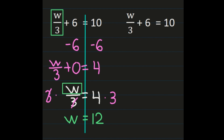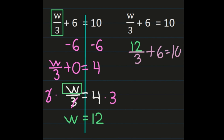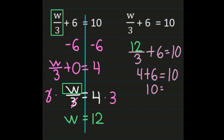We can check this just like our other two-step equations. Going back to the original equation w over 3 plus 6 equals 10, we substitute 12 for w. So 12 divided by 3 plus 6 equals 10. 12 divided by 3 is 4, so 4 plus 6 equals 10. And 4 plus 6 does equal 10, giving us 10 equals 10 — a true statement. So our solution w equals 12 is correct. If you don't get 10 equals 10, you made a mistake and need to solve the problem again.